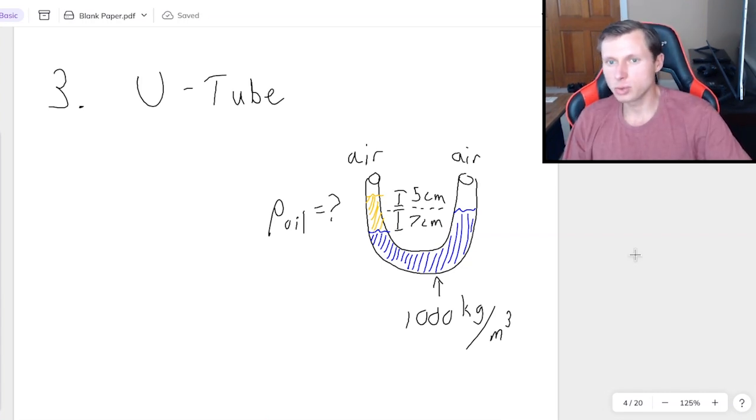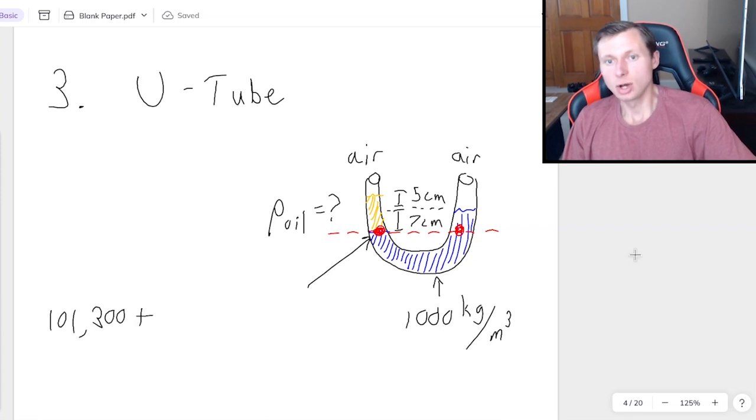So in order to solve this, we need to remember that trick we said earlier, and that is the pressure everywhere at the same elevation is going to be equal to each other. This pressure in red has to equal this pressure in red. So the pressure at that point right there is going to be the pressure from air, so 101,300, plus rho GH. Rho, I don't know, I'm solving for it. G is 9.8, and the height is 12 centimeters, 5 plus 7. So 12 centimeters. I should convert that to meters, right? So 0.12 there. That's going to be the pressure at that red dot.